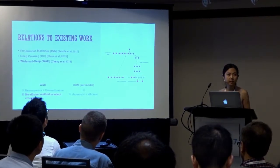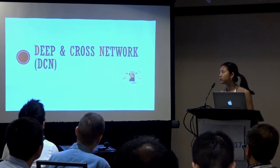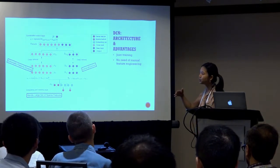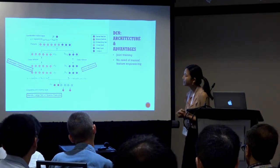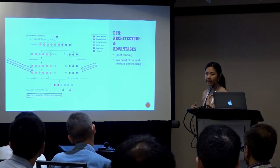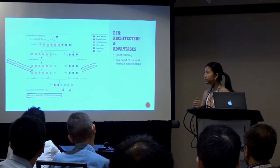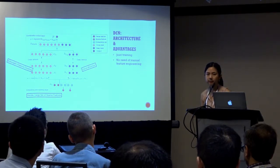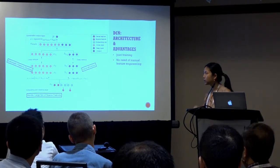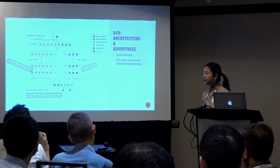So far I have talked about some existing work, and we're now in a position to introduce our deep and cross-network — DCN for short. What you see here is an architecture of the DCN. It starts with an embedding and stacking layer on the bottom. The output x0 is then fed in parallel to a cross-network and a deep network. The outputs from these two networks are then combined to generate your desired prediction. We jointly train all these components, so each component is able to learn from each other during optimization. DCN is able to handle a large set of sparse features.